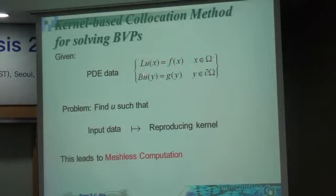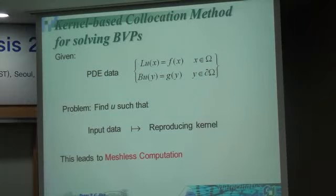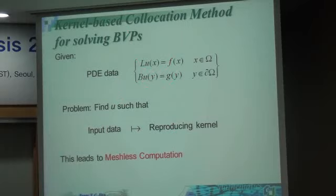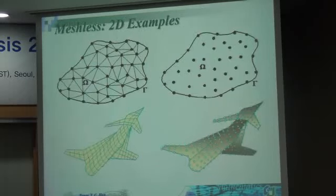The kernel-based collocation method for solving boundary value problems can be illustrated simply. Suppose I want to solve a boundary value problem: in the domain it satisfies a PDE, and on the boundary there is a boundary condition — Neumann, Dirichlet, or Robin. I treat all of this as PDE data, like a scattered data interpolation problem. We have points, we know differential values, and we want to find the unknown function. This is called the meshless computational method, because the approximation depends entirely on nodes, not on a mesh.